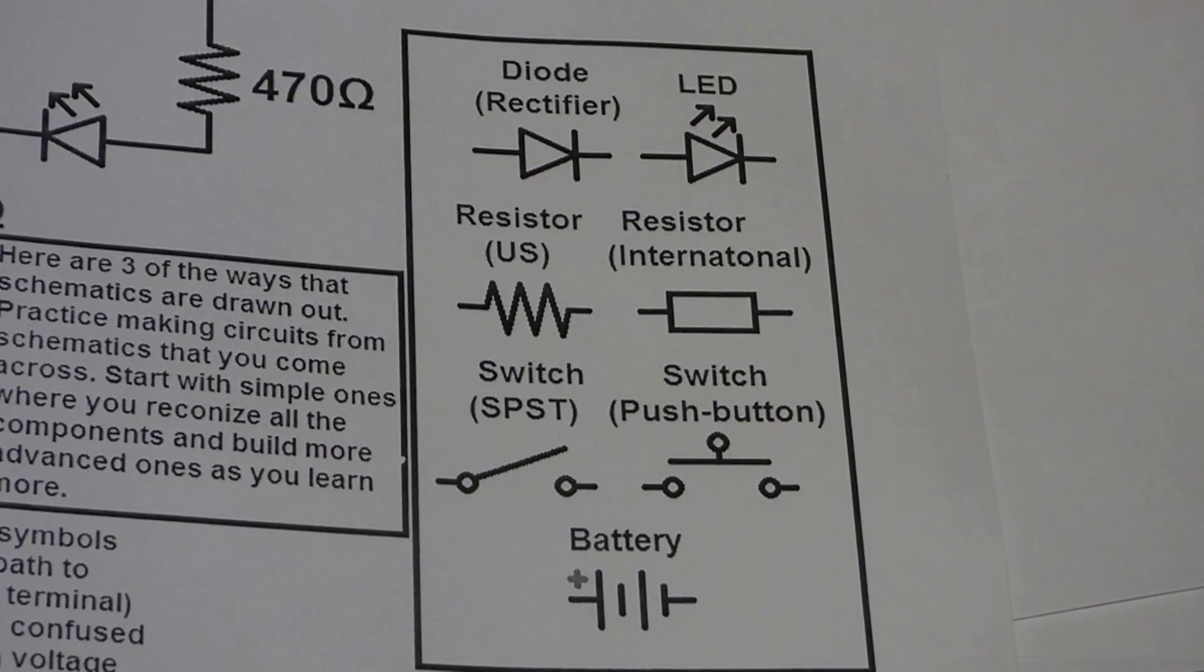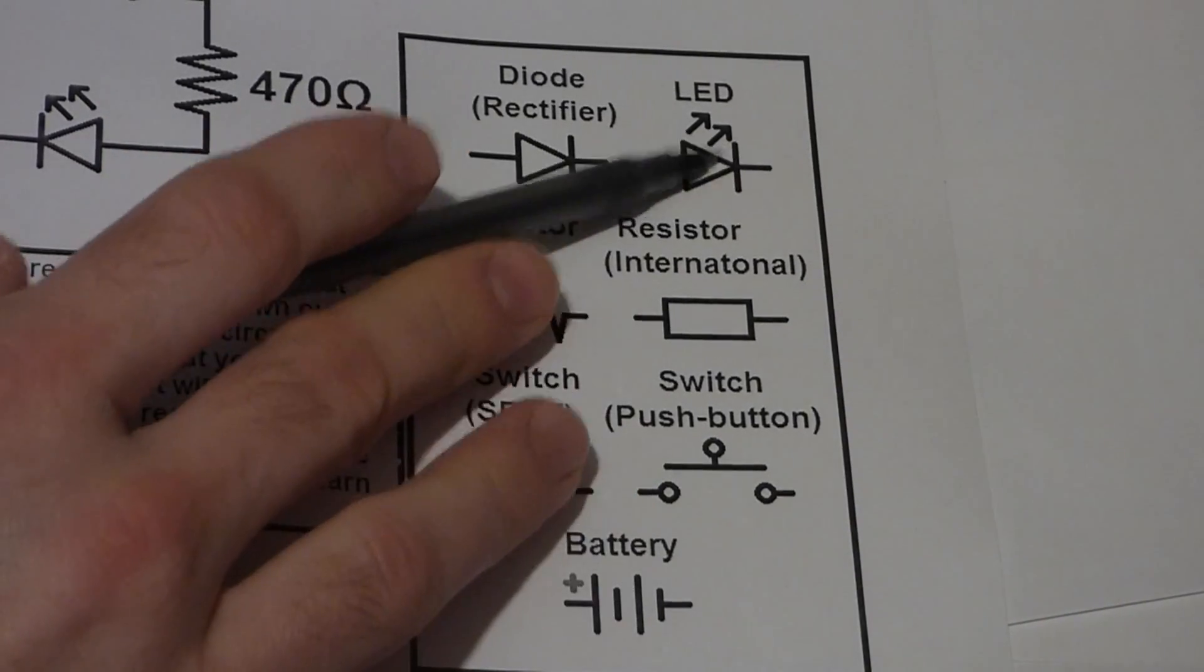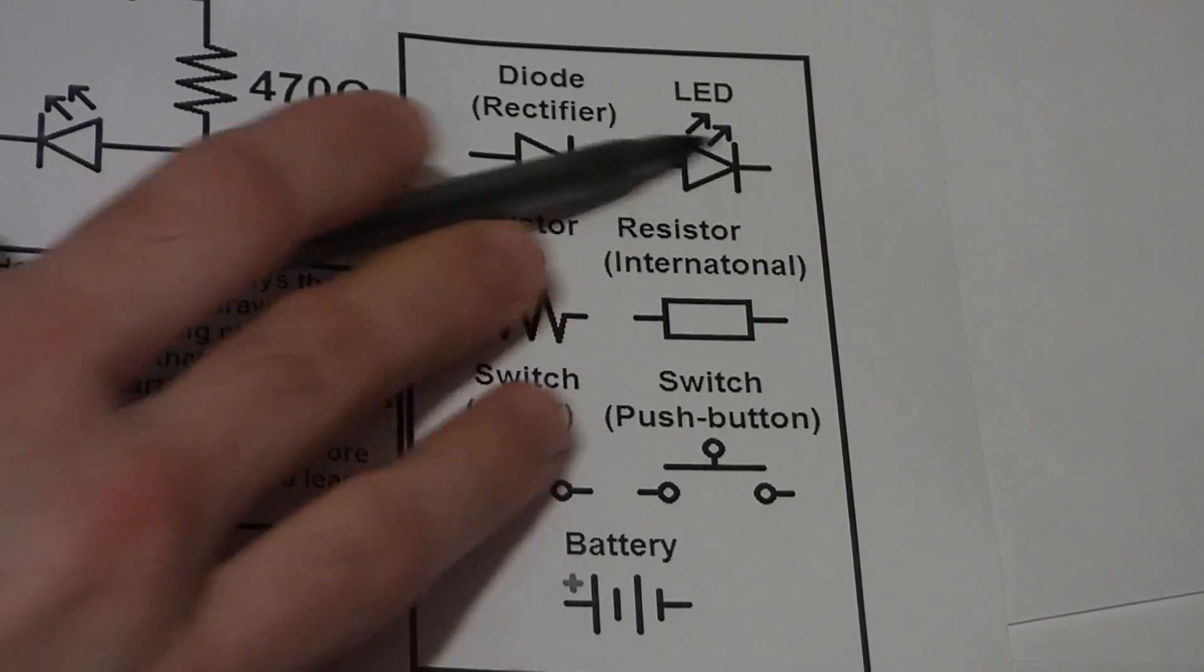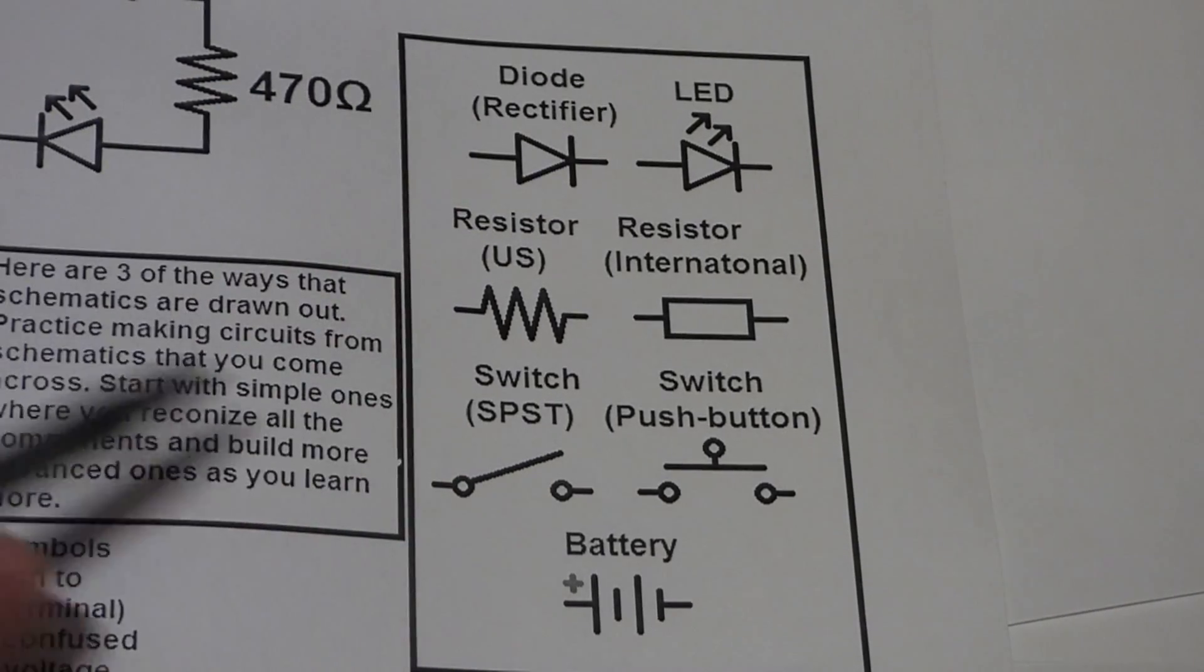And here's some more symbols. Diode usually looks like this and then variations such as an LED. LED is just a light emitting diode. Looks like this. So diodes generally look like this. If you see this you know it's some type of diode.